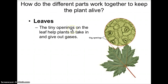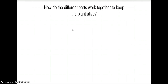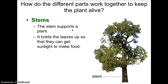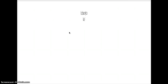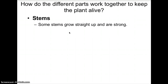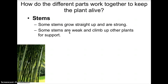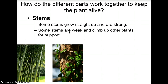Next, let's look at stems. The stem supports the plant and holds the leaves up so they can get sunlight to make food. There are different kinds of stems: some stems grow straight up and are strong, like the bamboo plant. Some stems are weak and need to climb onto other plants for support — these are called climbers. And some stems creep along the ground horizontally — these are called creepers.